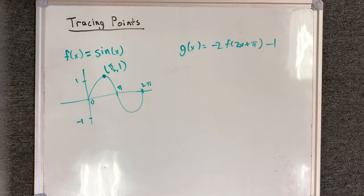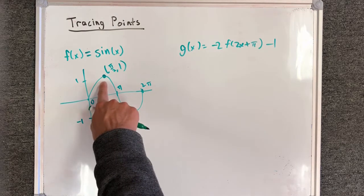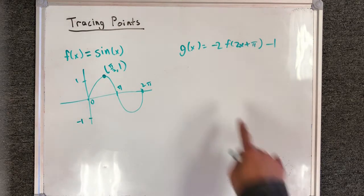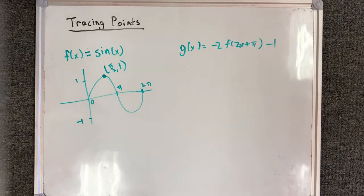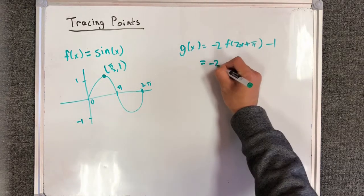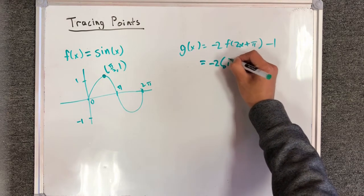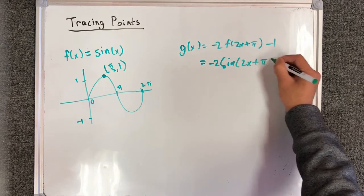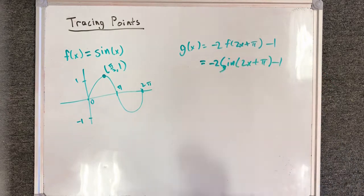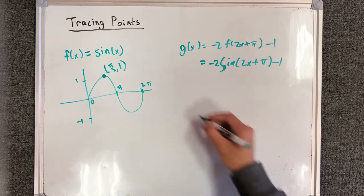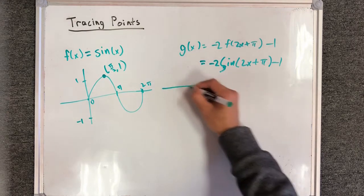For our third function, let's take a look at sine of x. I'm going to pretend that we're interested in the point pi over 2 comma 1, and I had a function g of x equals negative 2 f of 2x plus pi minus 1. So the equation for this is going to be negative 2 sine of 2x plus pi minus 1. Let's list out all the transformations.